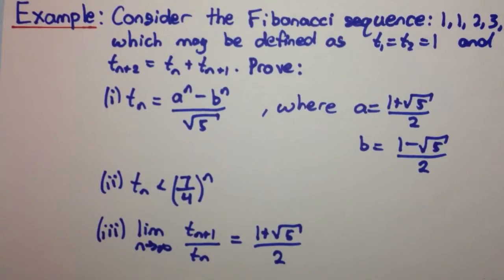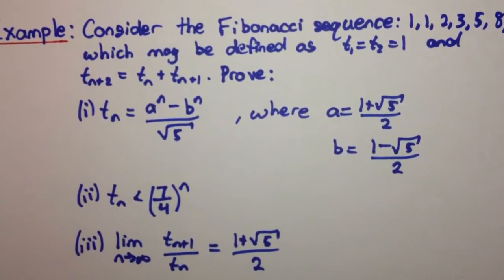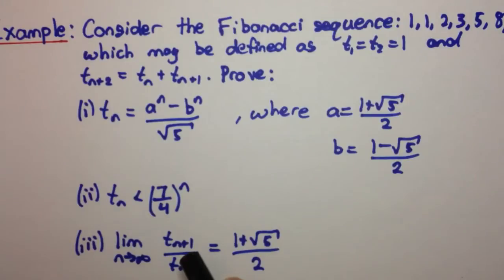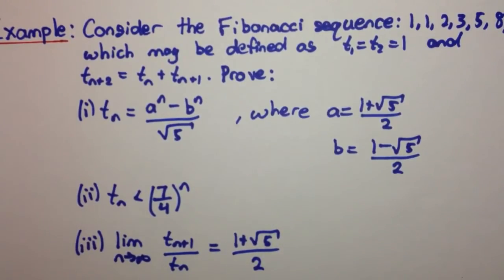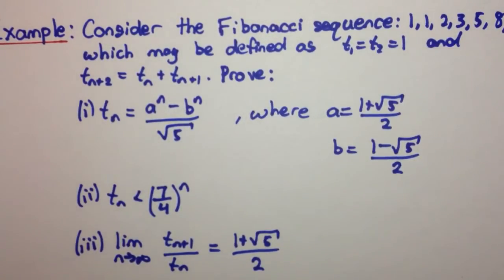So again, we're working with the Fibonacci sequence, and you can read all the details of the Fibonacci sequence. We're required to prove that the limit as n approaches infinity of t(n+1) over t(n) is equal to (1 + √5) / 2. So what we're looking for is the limit of a term to its previous term as n approaches infinity, and we're looking to show that it equals this number.